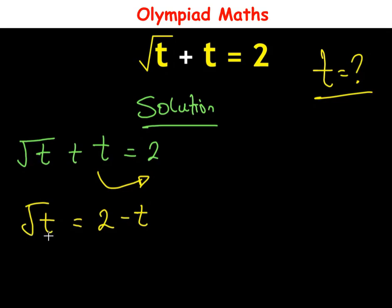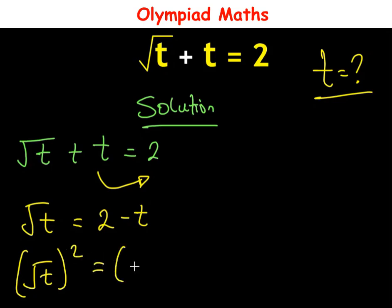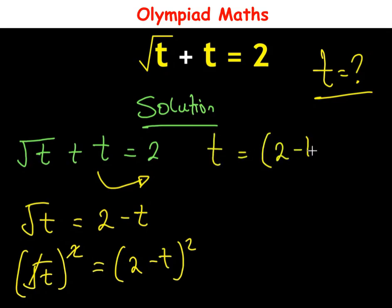Now we have made √t stand alone, so we are going to eliminate the square root. To do so we are going to square both sides of the equation: (√t)² = (2 - t)². The square cancels the square root, so t = (2 - t)².